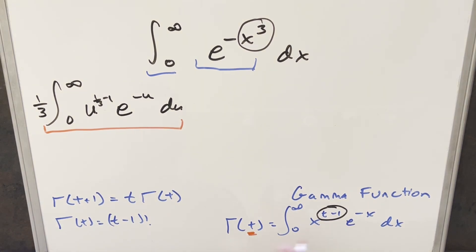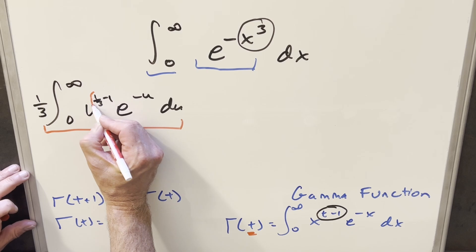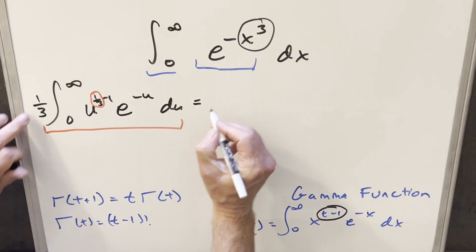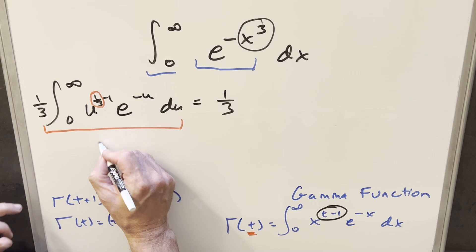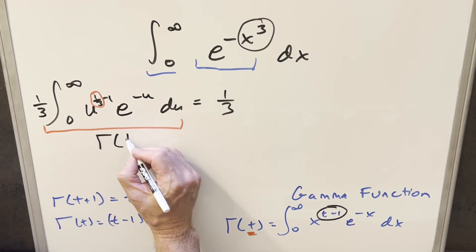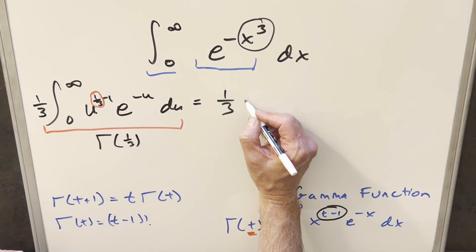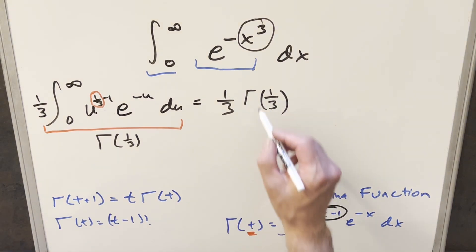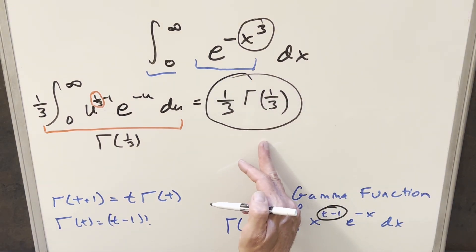Our input value for t is just 1/3. Pattern matching with this, we have 1/3 in front, and this whole thing is Γ(1/3). So we end up with (1/3)·Γ(1/3). This is actually a fine solution.